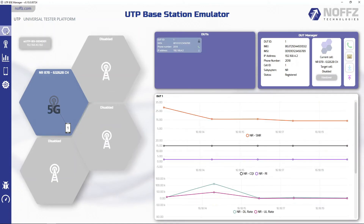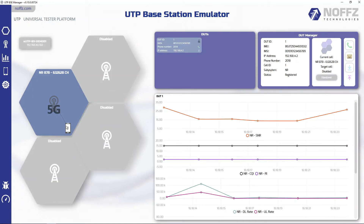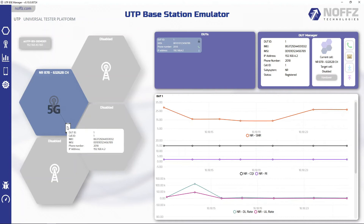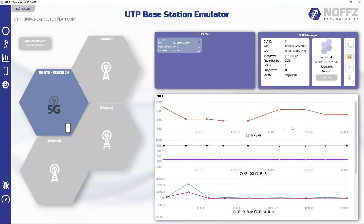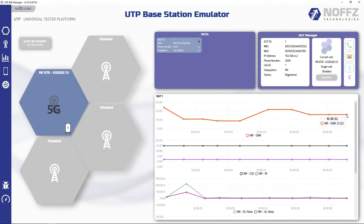To identify the phone, let's look at the list to check the IP address, phone number, IMSI, and IMEI, while we can immediately see the connection parameters on the chart for further analysis.